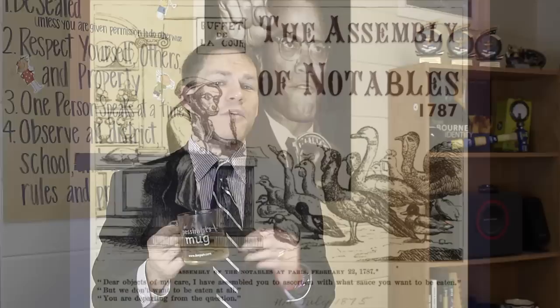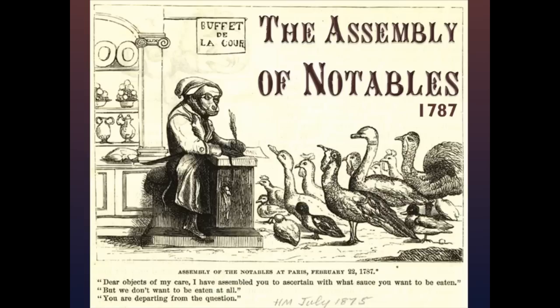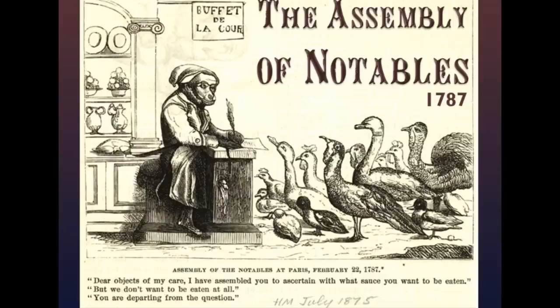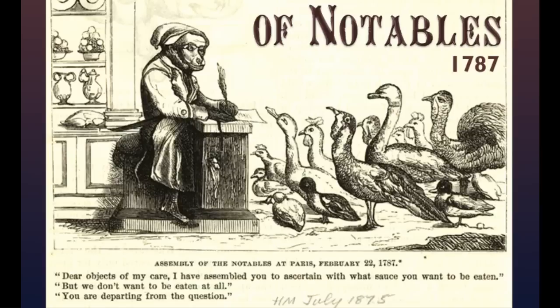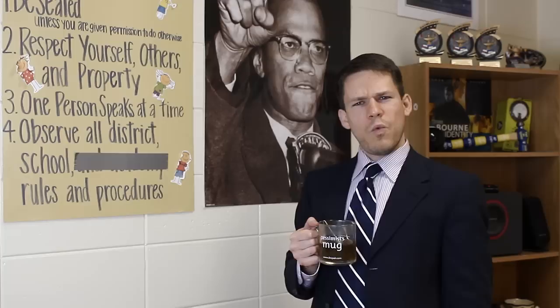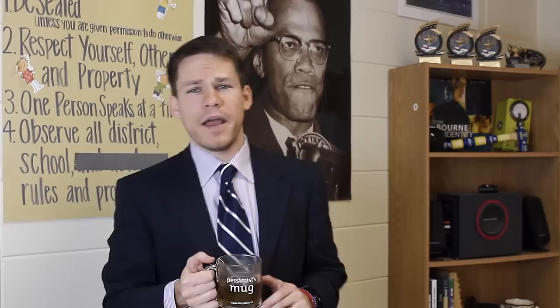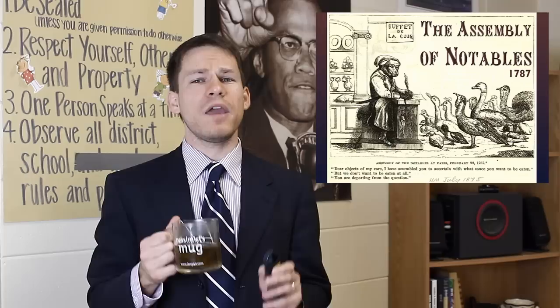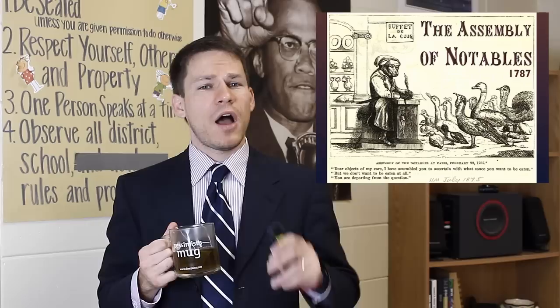There's a political cartoon from the time showing a bunch of geese and a fox-looking figure asking them: with what sauce would you like to be cooked? And the geese are thinking: we'd rather not be cooked at all. In fact, not only do we not want to be cooked, but if you have in mind to cook us, we want the Estates General to convene — we want this to be a bigger thing than just an assembly of notables. So this assembly of notables is a failure.